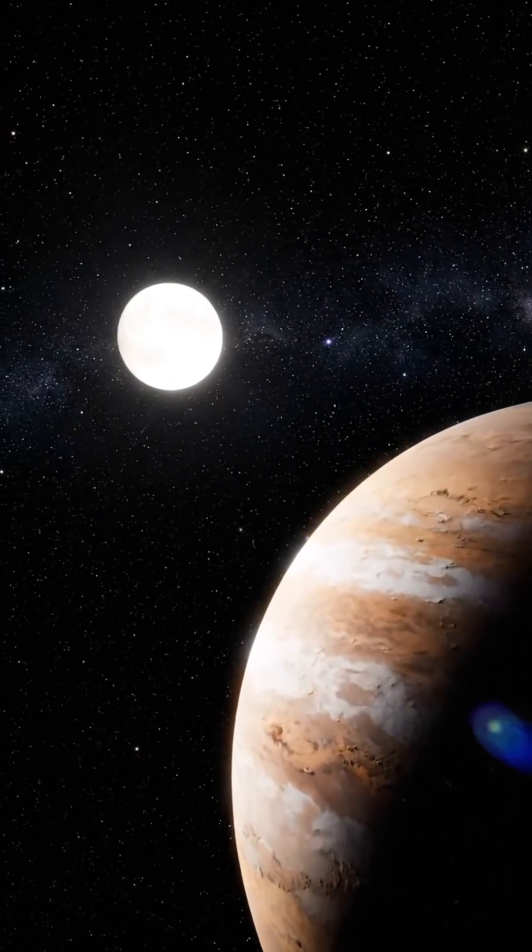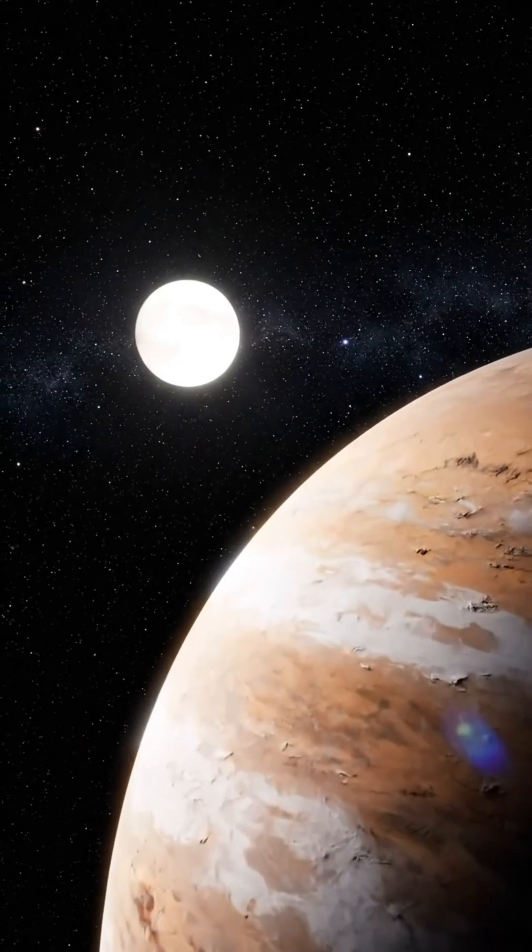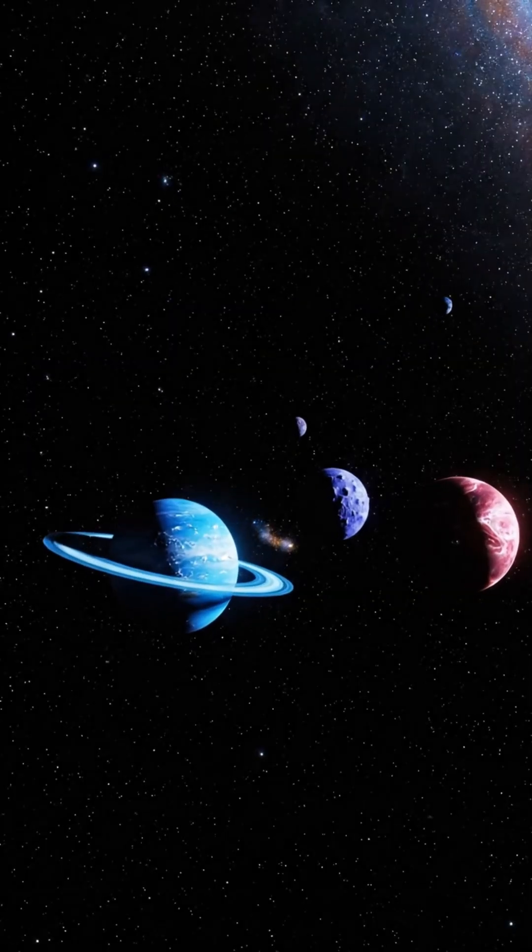By the time you reach Neptune, you'd be looking at a tiny coffee bean nearly 800 meters away—over half a mile of empty space between it and the sun in your hands.